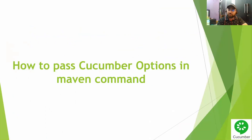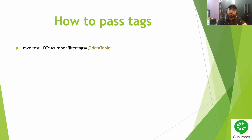Let me open the terminal. To pass a particular tag, we write 'mvn test' to execute the test cases. We use '-D' to pass a parameter to Maven, and the Cucumber parameter for tags is 'cucumber.filter.tags'.